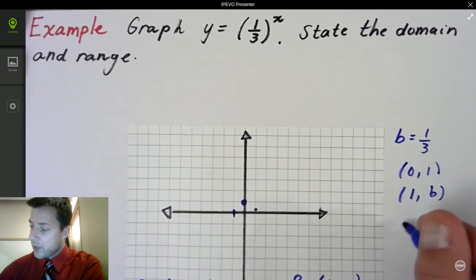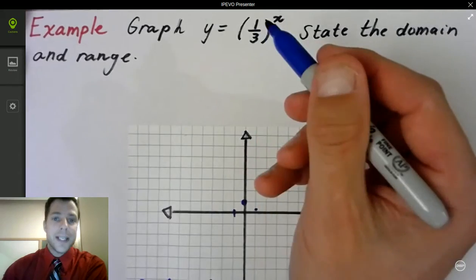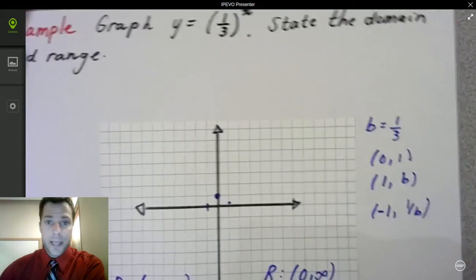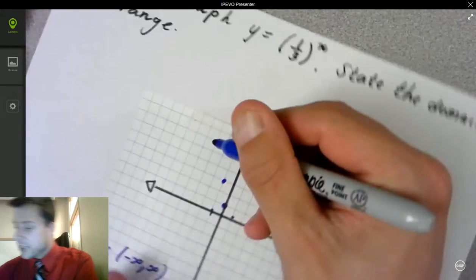When I do negative 1, negative 1 comma 1 over b, well, 1 divided by 1 third is 3. So you're going to have negative 1 and 3 here. And so here's my graph.